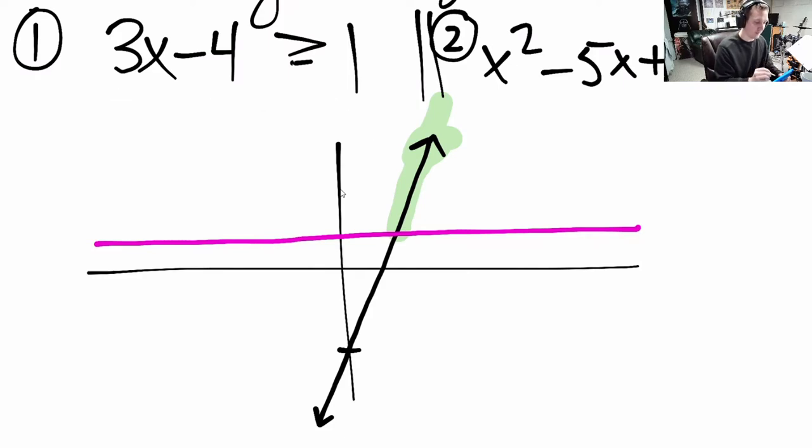It's the green highlighted part. But we're not really talking about the part of the graph. The solution to this inequality is not a piece of the graph. The graph helps us see where, but we're not answering this part of the graph satisfies that. What we're trying to look for is the x's that make this true, so the x's where this graph is bigger than this graph.